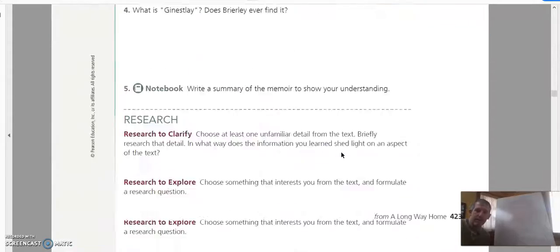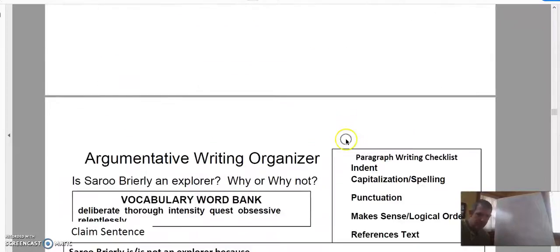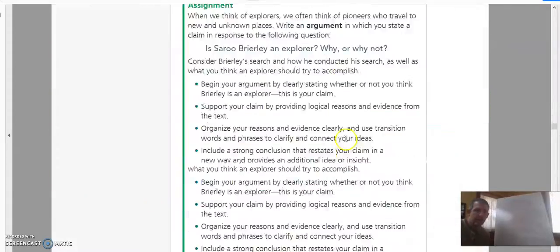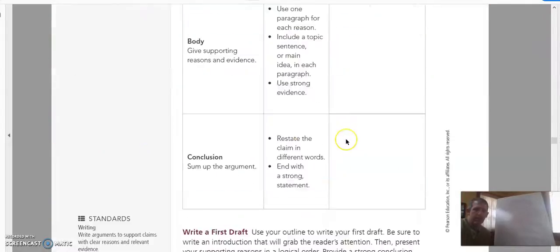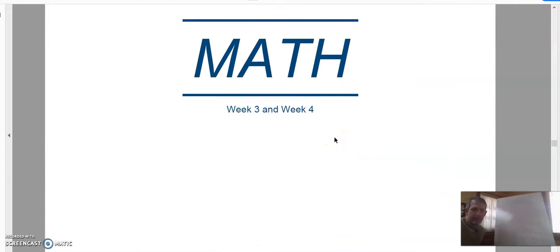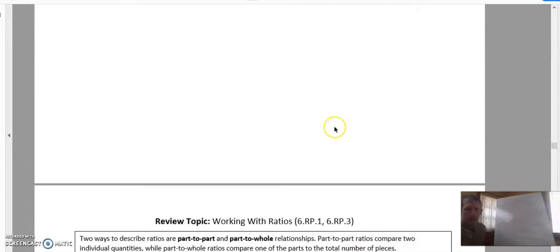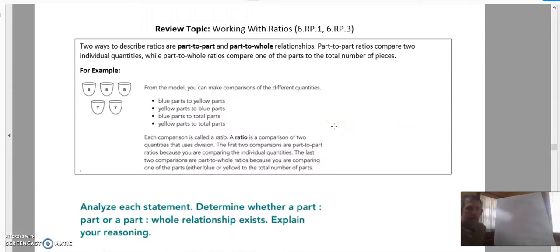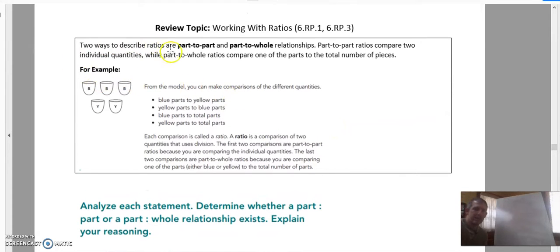We're going to look at the math section here. It's going to start talking about ratios. Math week three and four. So first part is just a little review. Two ways to describe ratios are part-to-part and part-to-whole relationships, because a ratio is a comparison of two quantities. Part-to-part compares two individual quantities while a part-to-whole compares one of the parts to the total number of pieces. It's a little bit like fractions.